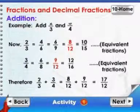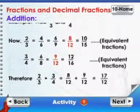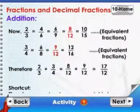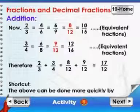Therefore, 2 by 3 plus 3 by 4 is equal to 8 by 12 plus 9 by 12 which is equal to 17 by 12.